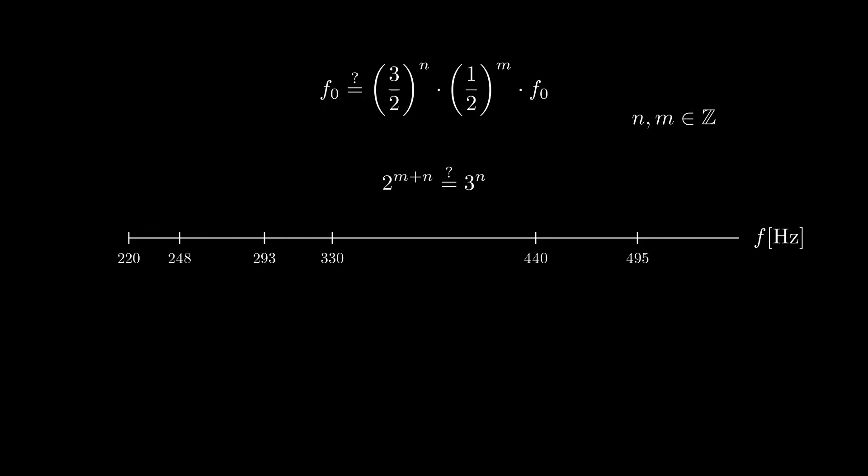2 to the power of any number will always be an even number. But 3 to the power of any number will always be an odd number. And an even number will never be the same as an odd number. This means we'll get infinitely many keys in one octave if we continue with this system. So we better stop this.